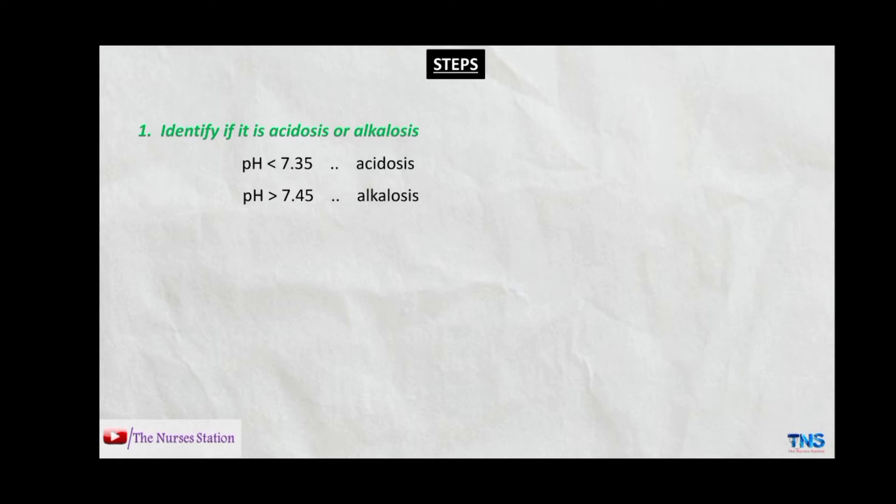Let's do some examples. If the pH is 7.31, we compare it to the normal range and see it is less than 7.35, so the patient is having acidosis. If the pH is 7.50, we compare it to the normal range and see it is more than 7.45, which means the patient is having alkalosis.